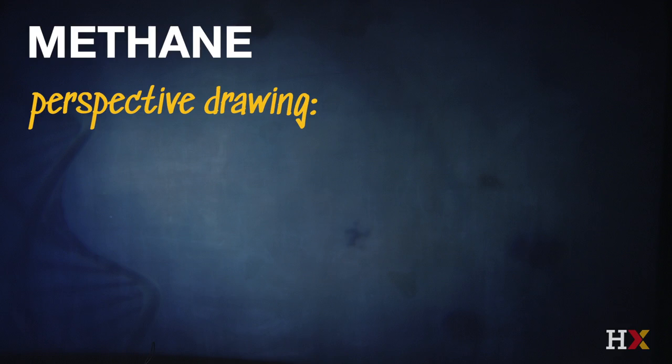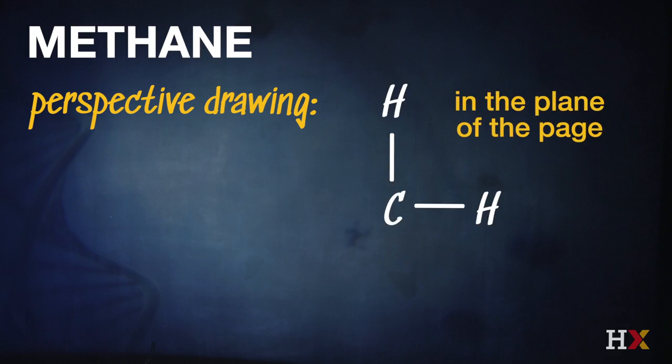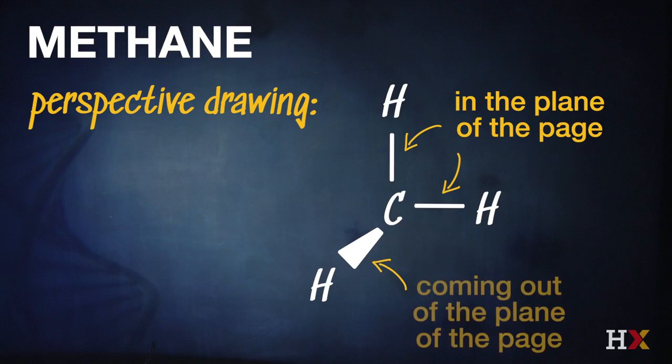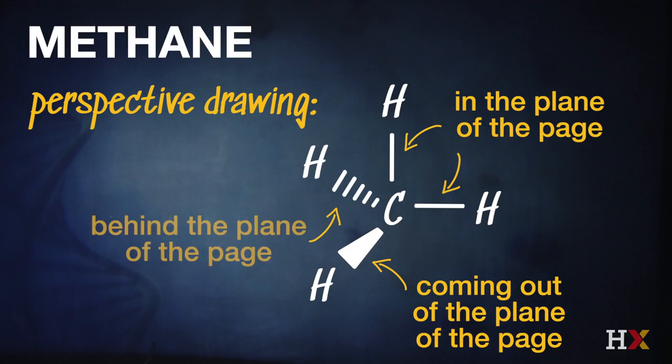Because if we take that central carbon and we place two of those atoms in the plane of the paper, we represent that in a perspective drawing by a single line that represents a bond in the same plane. But the tetrahedral structure we represent by connecting one of those hydrogens with a diagram that represents that it's coming out of the plane of the paper. And the fourth hydrogen we represent by a dashed line that represents that that hydrogen atom is behind or below the plane of this diagram.